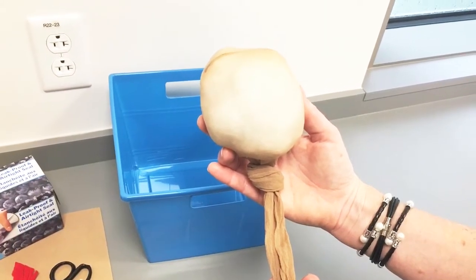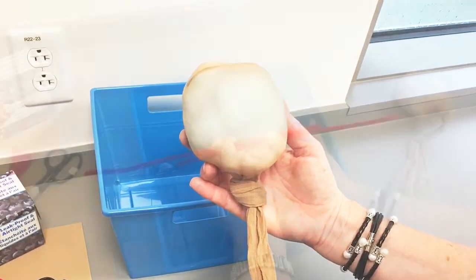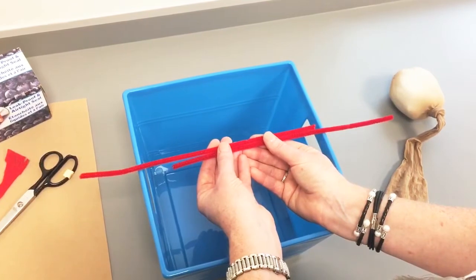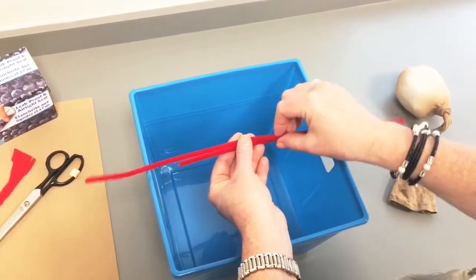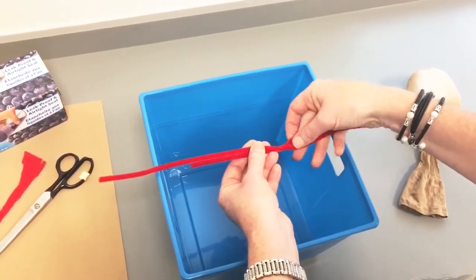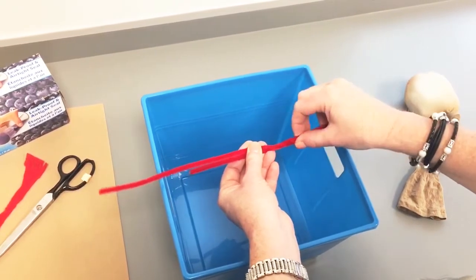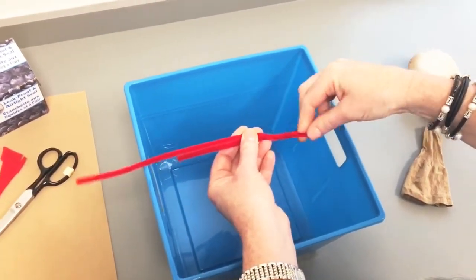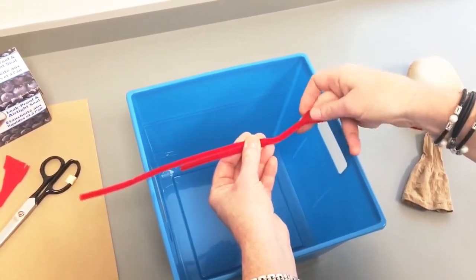First, a postpartum uterus is built. Next, pipe cleaners are used to simulate the round ligament. We found that for the size of our bin, one pipe cleaner was not long enough. Therefore, we twisted two together.